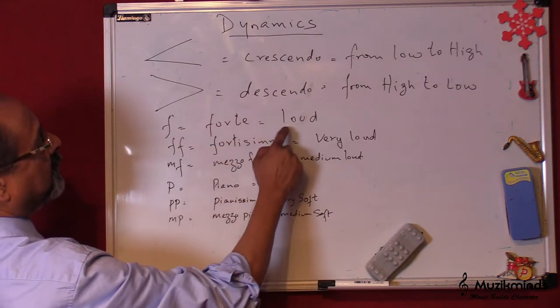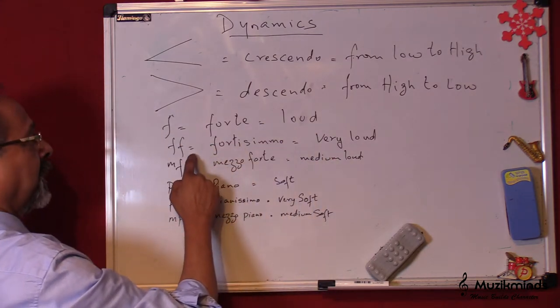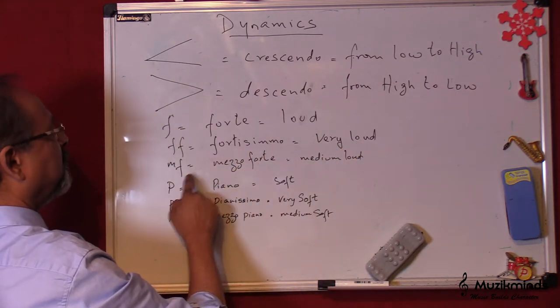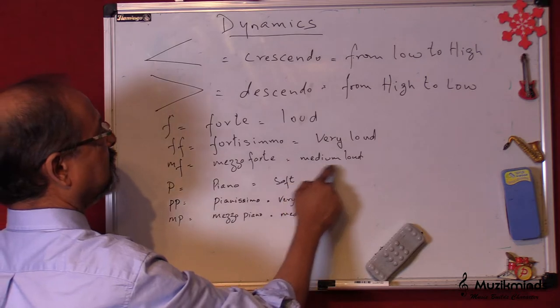This is forte, f is forte, loud. FF is fortissimo, that is very loud. MF means mezzo forte, which is medium loud.